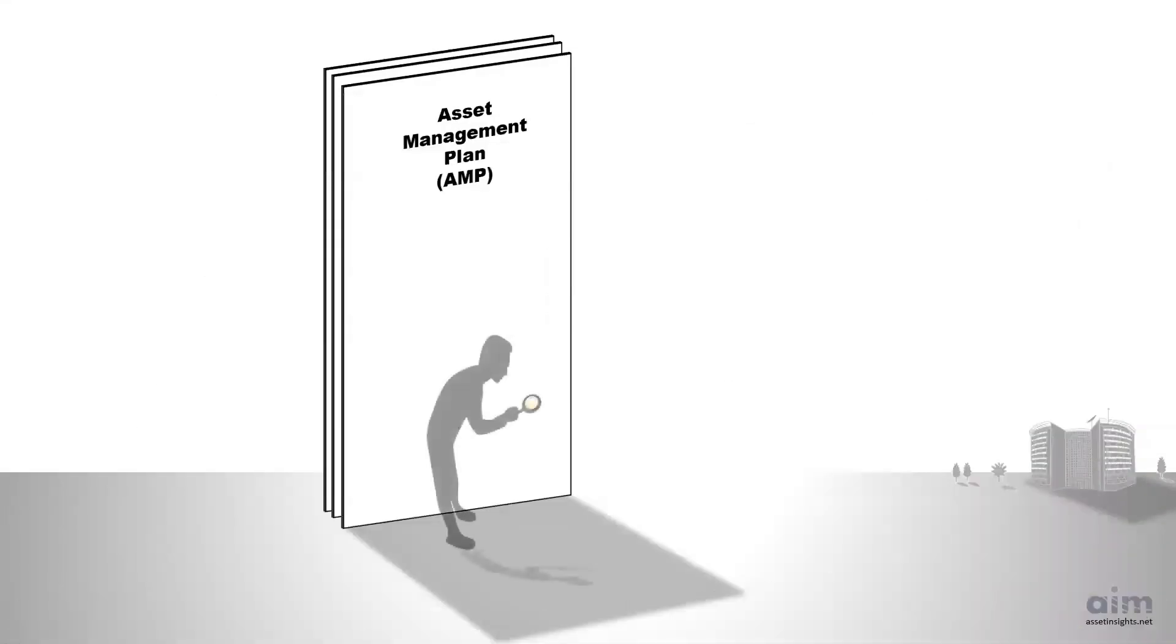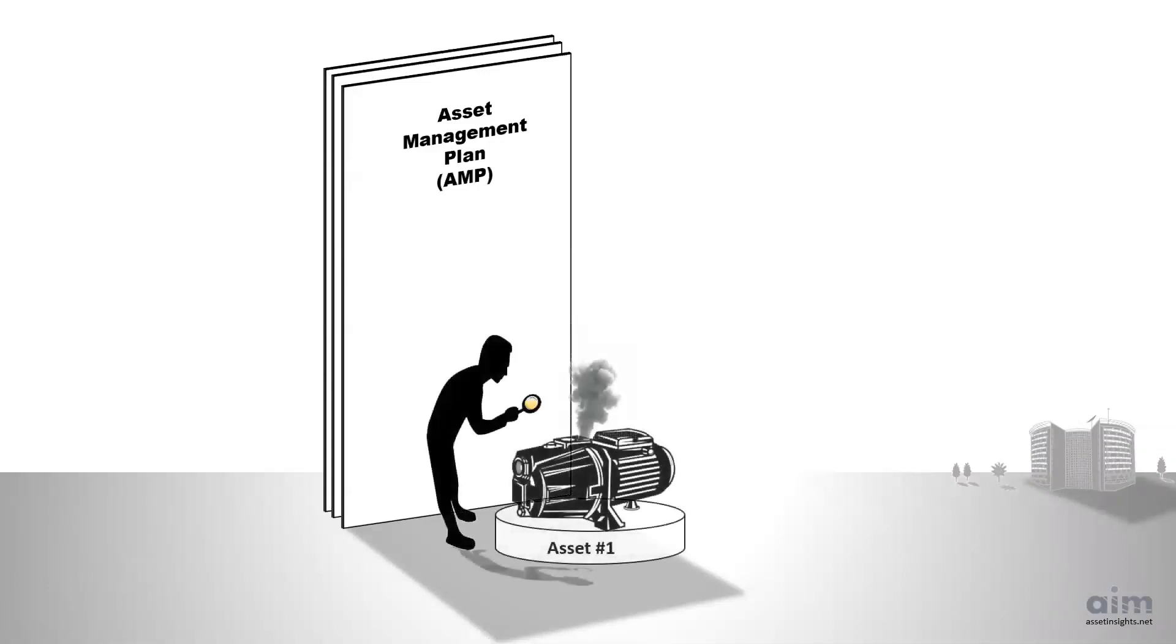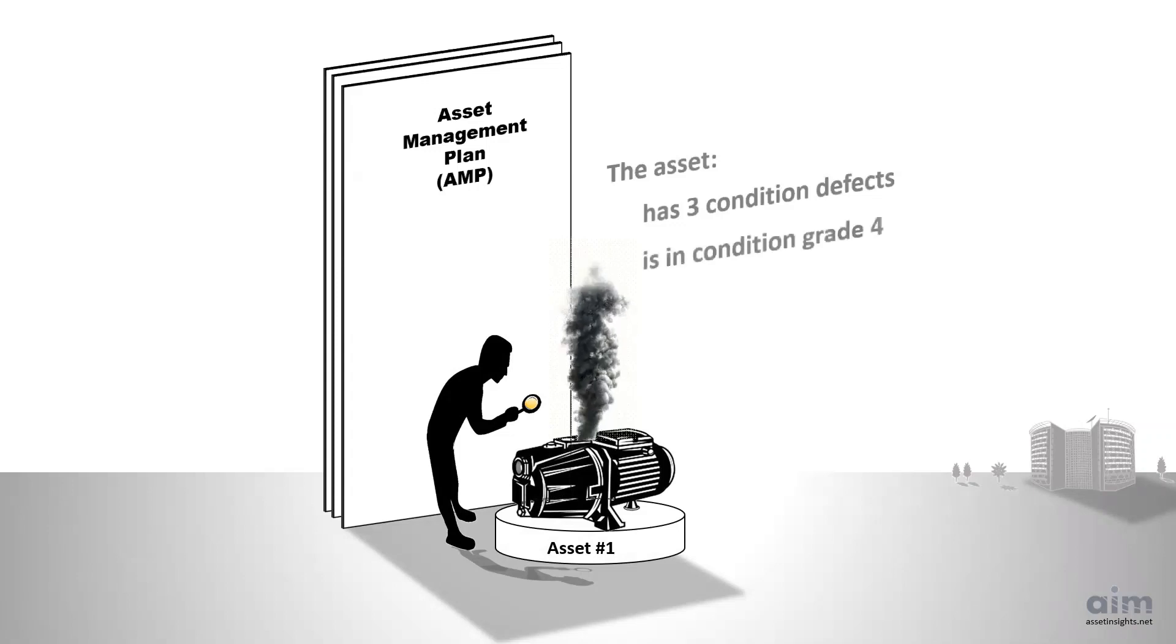Empirical data on each asset can provide an additional layer of planning information. The individual defects observed with the asset, the overall condition grade of the asset, and the reliability of the asset helps the organization to make forecasts.